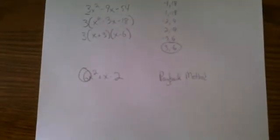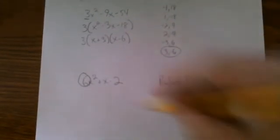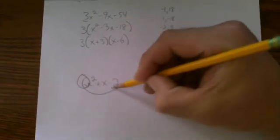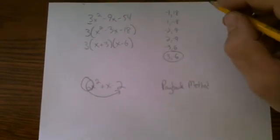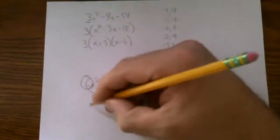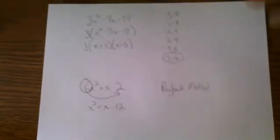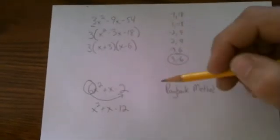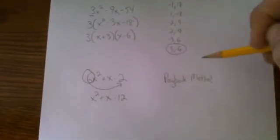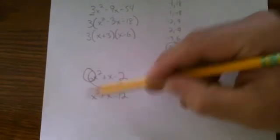For the payback method what we're going to do is circle that leading coefficient and borrow it. The way you borrow it is to multiply it into the last number. So we have a new trinomial which is not an equivalent trinomial. This is like mathematical magic. This is not an equivalent expression. This is simply helping us perform the payback method. So now this is a factorable trinomial.